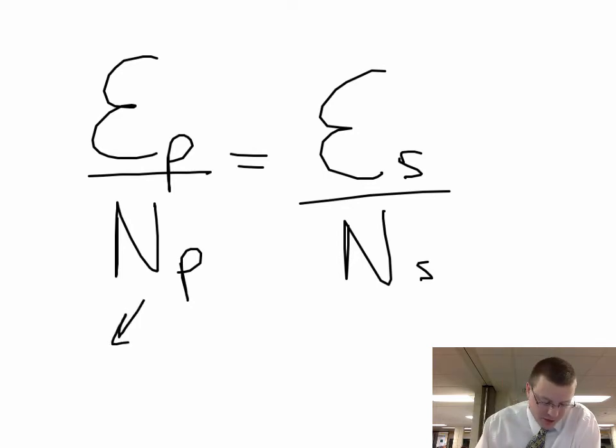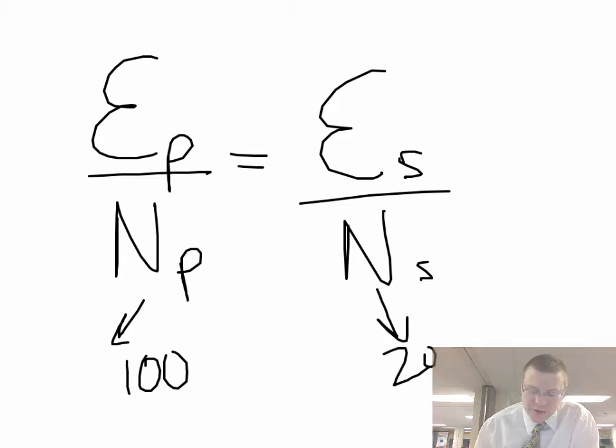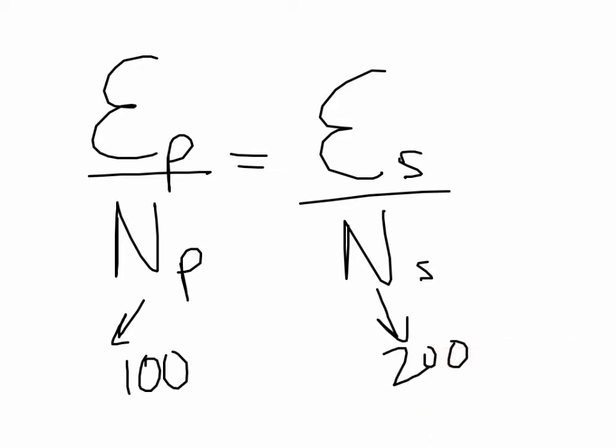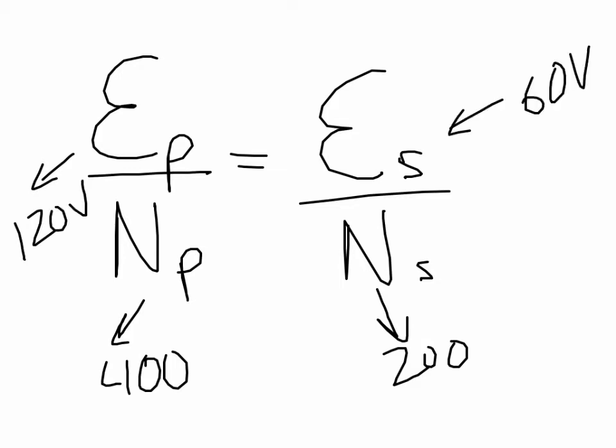The primary coil had 400 turns and the secondary coil has 200 turns. If the primary voltage is 120 volts, then the secondary voltage comes out to 60 volts to keep that ratio the same. What we call this is a step-down transformer — we went from a coil that had lots of turns, and when it induced currents in the secondary coil that had fewer turns, the voltage went down from 120 to 60 volts.